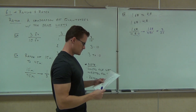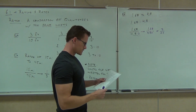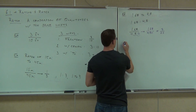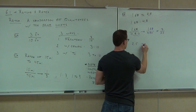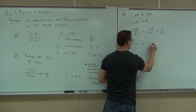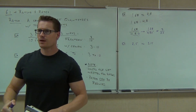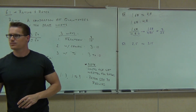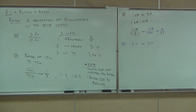Let's do one on your own: 2.5 to 3.15. Write that as a fraction, get rid of the decimals like I just showed you, and then reduce that fraction.